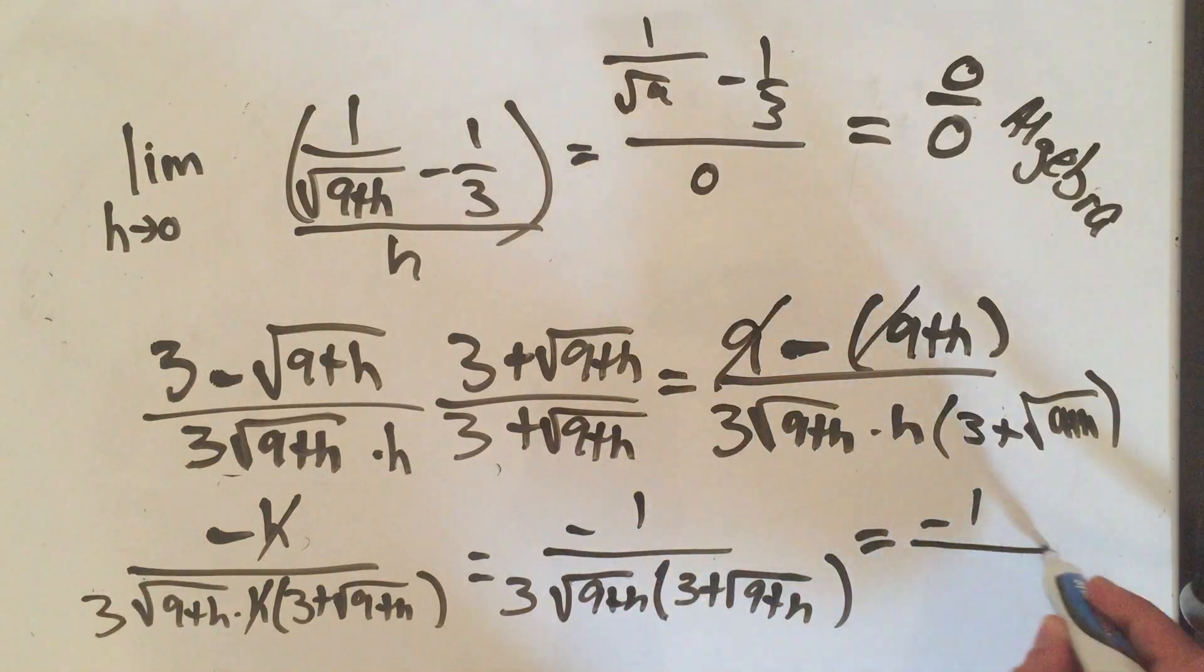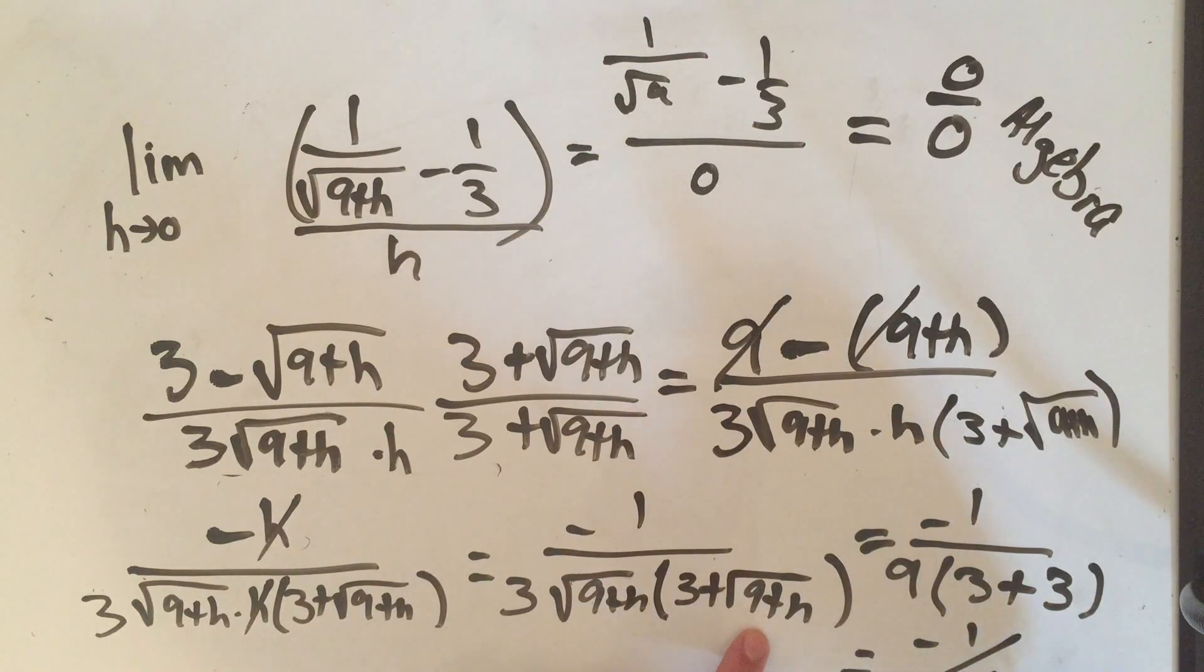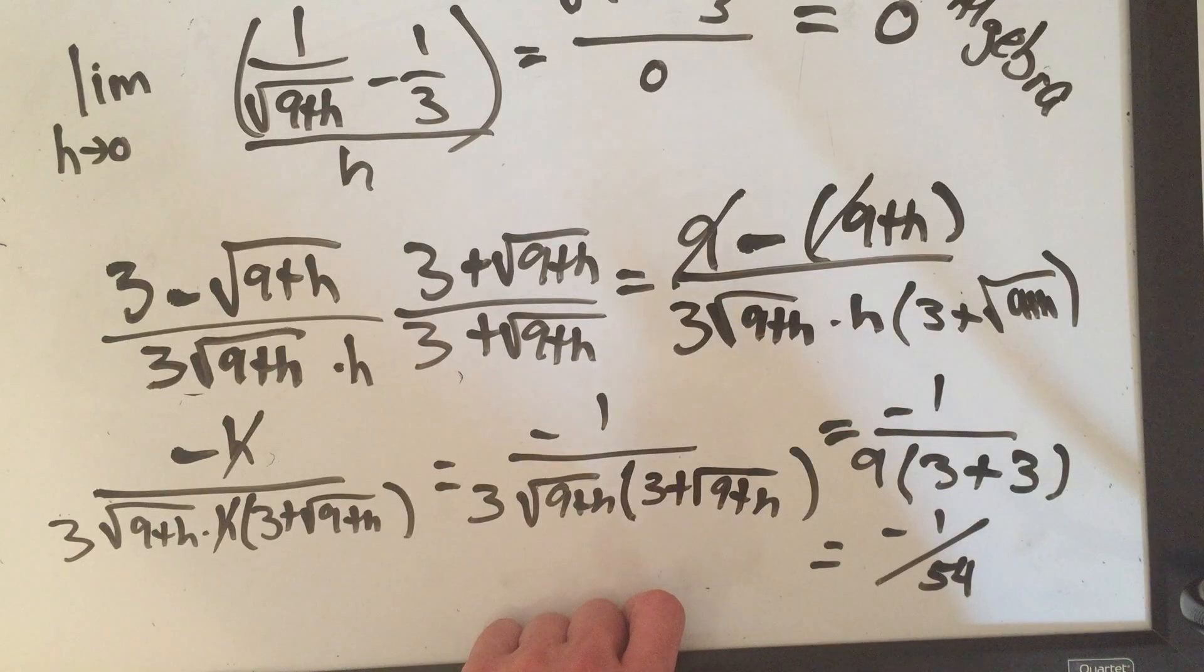So if I plug in 0 for h here, let's see, I'm going to get square root of 9 is 3. 3 times 3 is 9. This will be 3 plus, if I plug in 0 for h, I'll get square root of 9 is 3. It looks like we're going to get minus 1 over 9 times 6. 9 times 6 is 54. I hope that's right. Thanks for bearing with me.